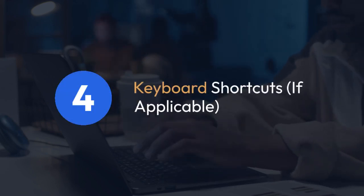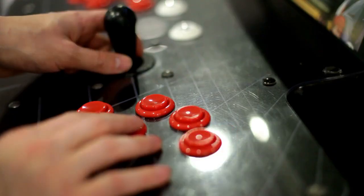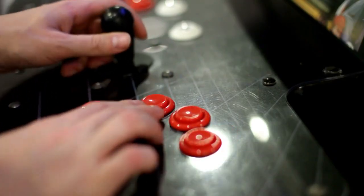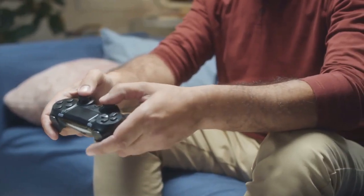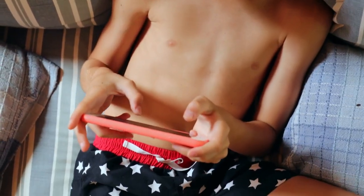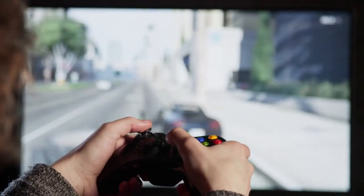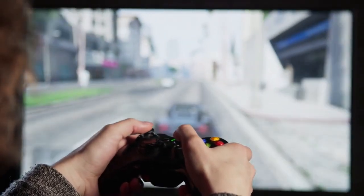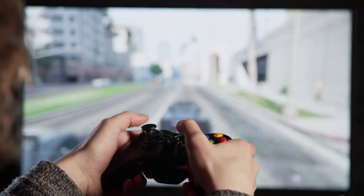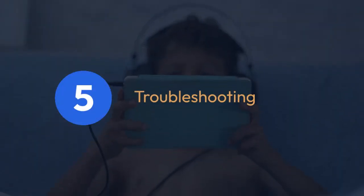Four: keyboard shortcuts, if applicable. If you have a keyboard connected to your Batocera system, you may find that pressing the ESC key will bring up the Batocera menu, providing a way to exit the game. This is primarily useful if your controller malfunctions or lacks certain button functionality. Keyboard shortcuts aren't consistently supported across all games and emulators, so relying on the controller methods is generally safer.